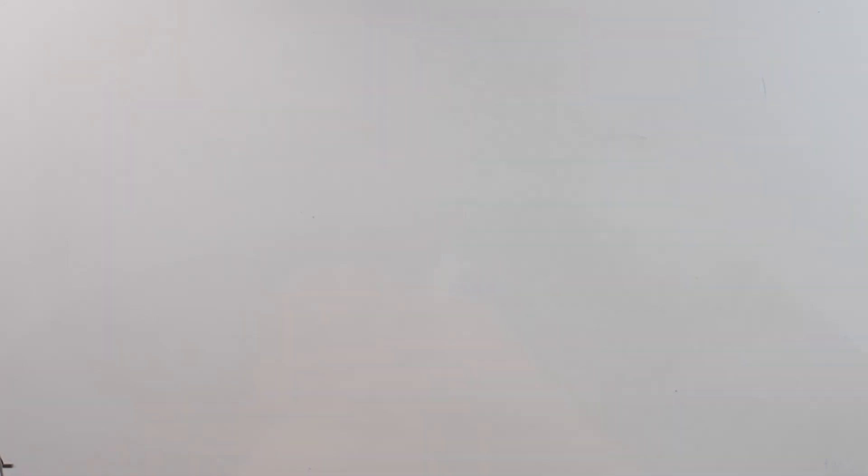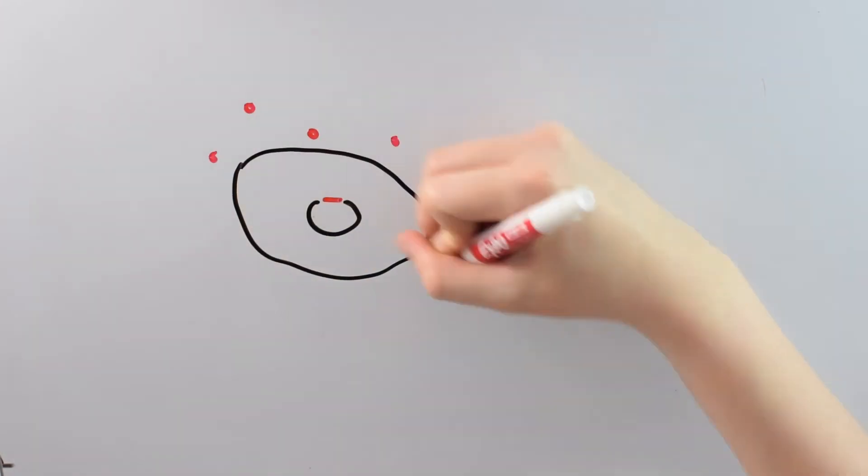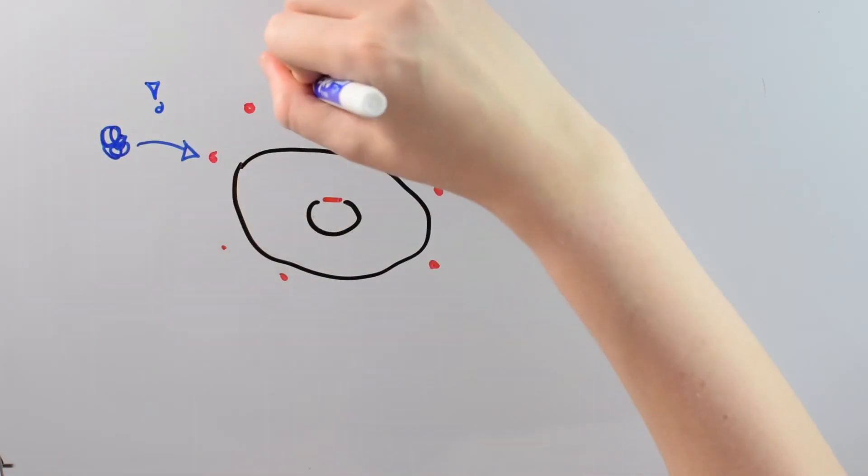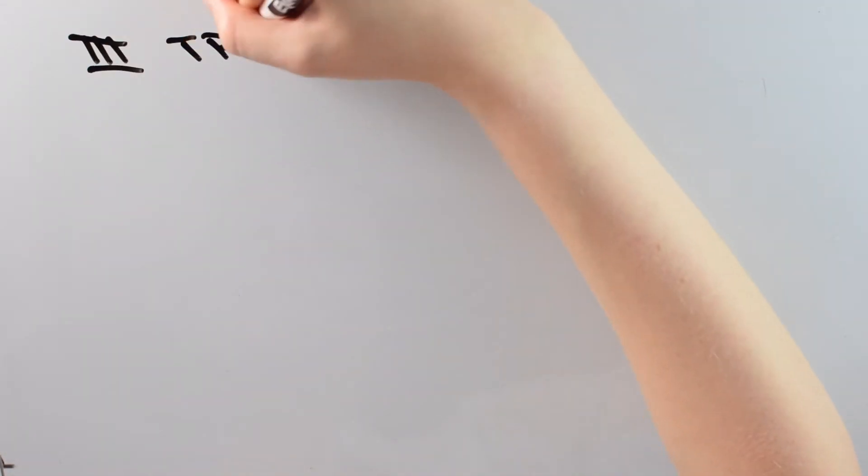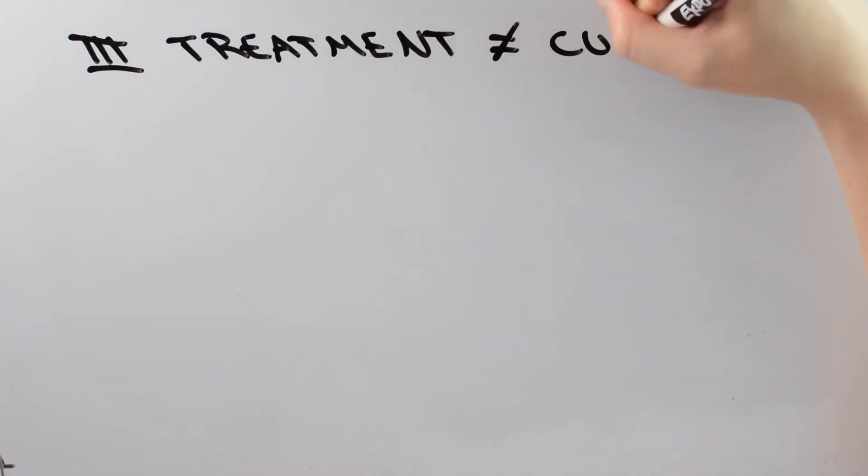So here's where it gets tricky. It seems like if the inhibitors work by stopping HIV in its tracks, then the first time that you take the inhibitors, you should be cured. Unfortunately, it's not that simple. And the treatment we have right now isn't a cure.